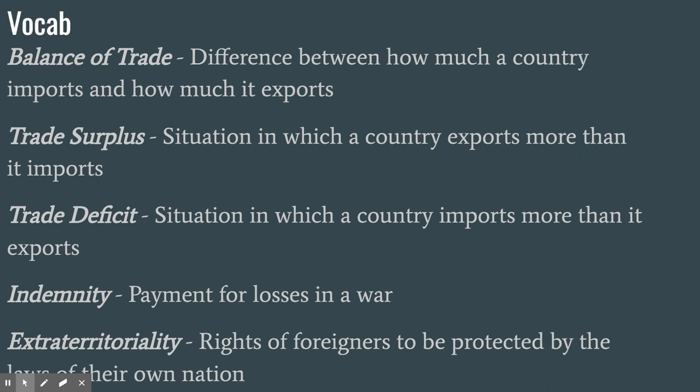The most important term is extraterritoriality — the rights of people to be protected by their own laws, even if they aren't in their own nation. Think of it this way: if someone from the United States goes to France and breaks a French law, they'd normally be arrested. But with extraterritoriality, if that law wasn't illegal in the United States, they wouldn't be arrested in France because they follow U.S. laws, not France's.